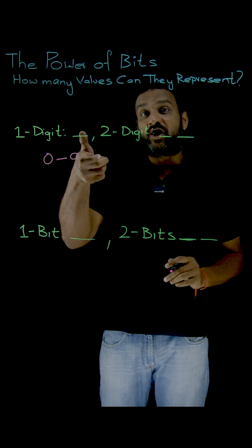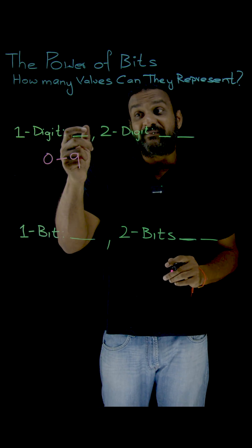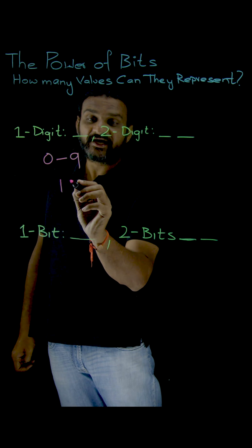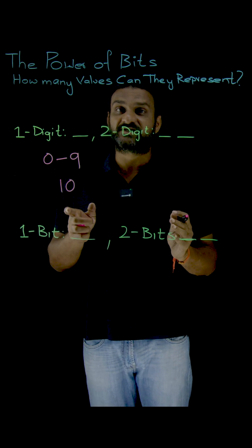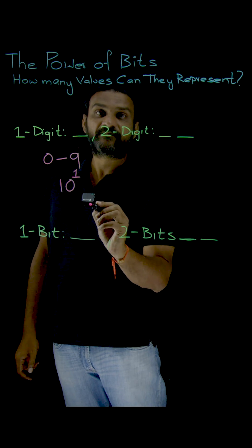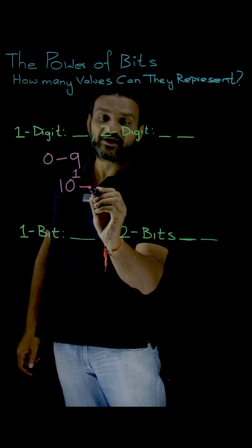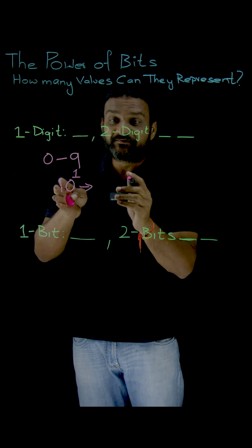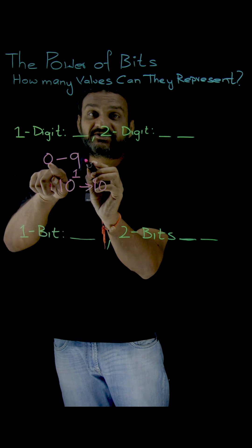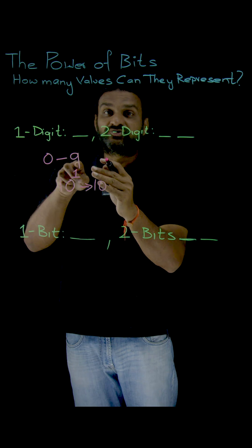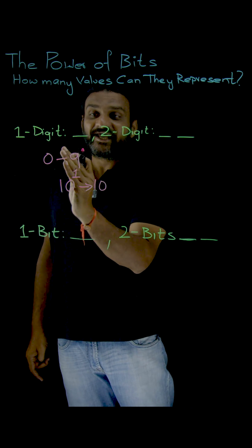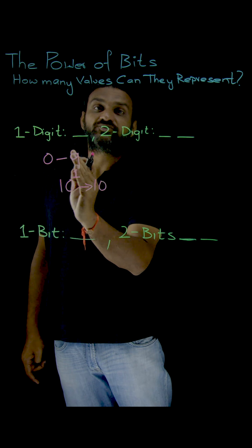How did we get this? The mathematical understanding behind this concept: how many different symbols are there? There are 10 different symbols, and how many spaces are there? There is only one space — 10 power 1. So the different decimal numbers that are possible is 10, and the range of those numbers is from 0 to 9. In this space we can accommodate any digit between 0 to 9.